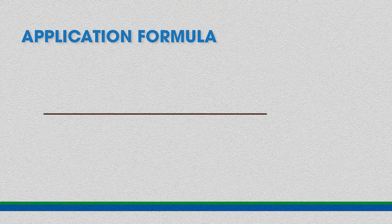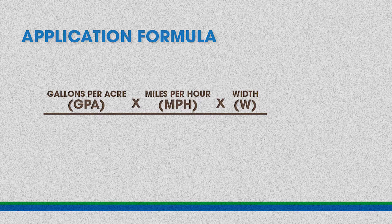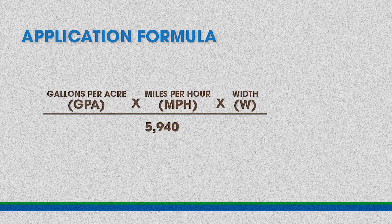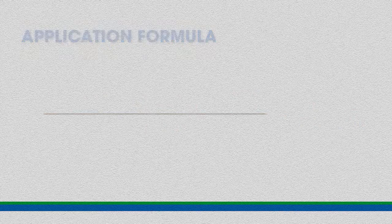We use this formula: take the gallons per acre, multiply that by the ground speed in miles per hour, multiply that by W — the effective sprayed width in inches — and divide it by the constant 5940. The 5940 is a constant used to convert all the different measurement units, and that will tell us the flow rate we need out of the nozzle in gallons per minute.